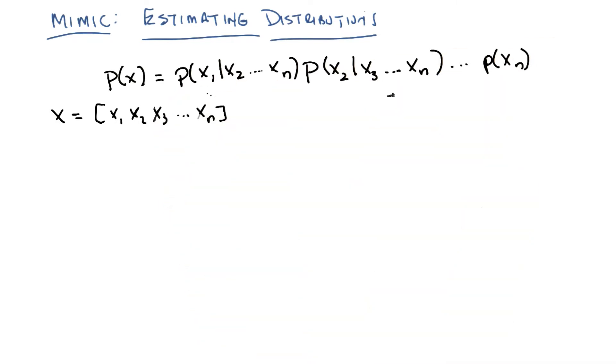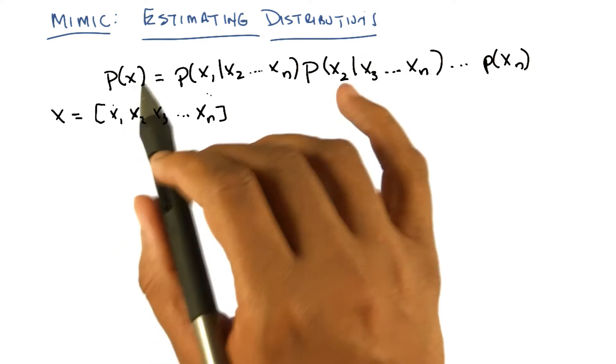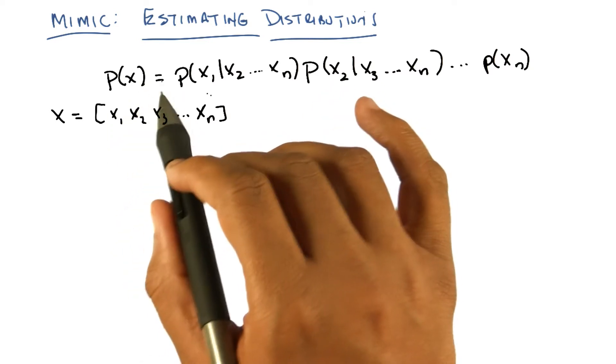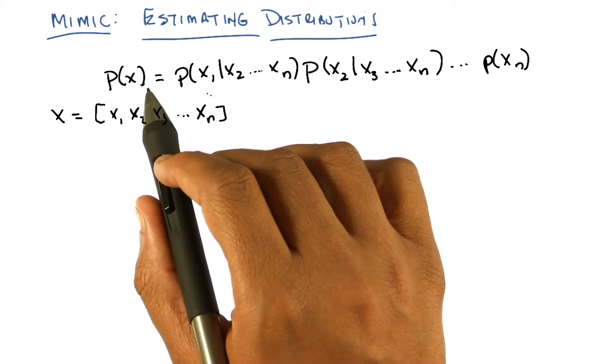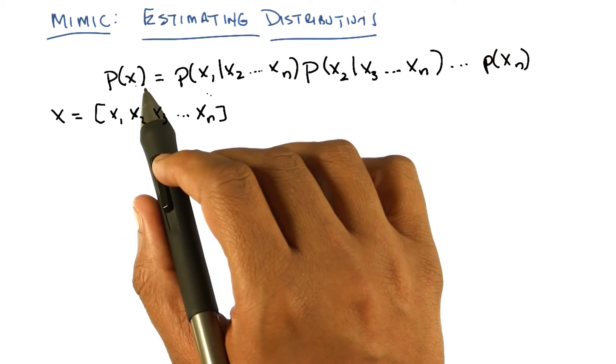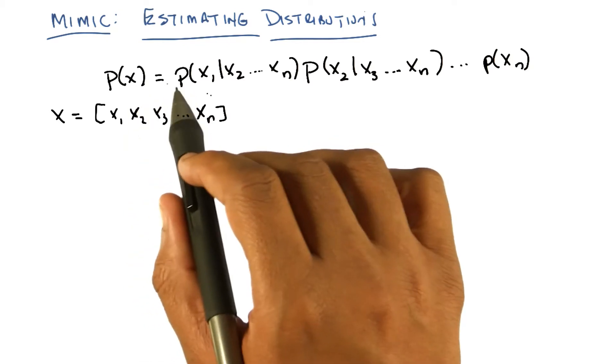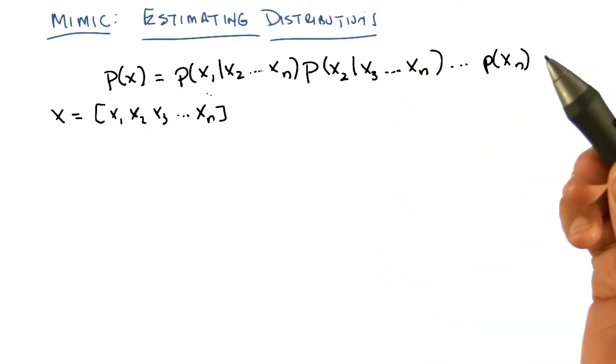What I really want to know from my p sub theta, and I'm going to drop the thetas here for the purpose of just describing this generic distribution, is I want to say, well, the probability of me seeing all of the features of some particular example is just the joint distribution over all of those features. Now, of course, we could just estimate this, but that's going to be hard. Why is it going to be hard?